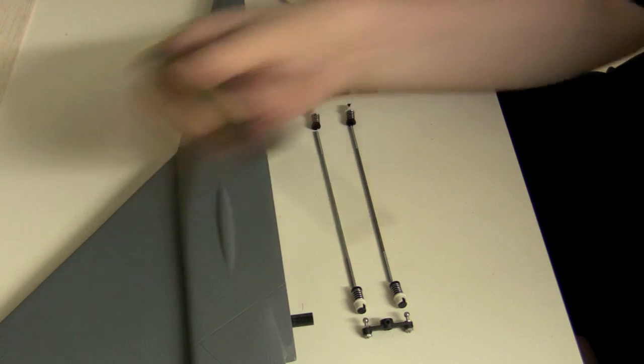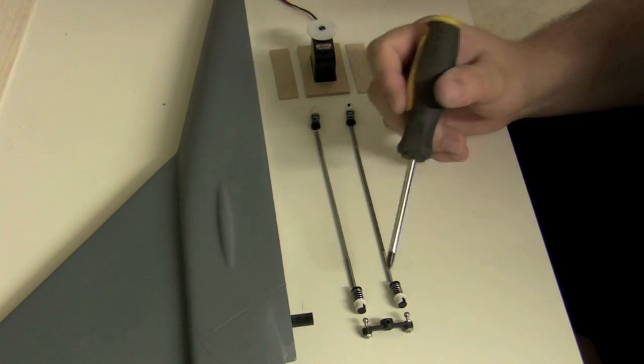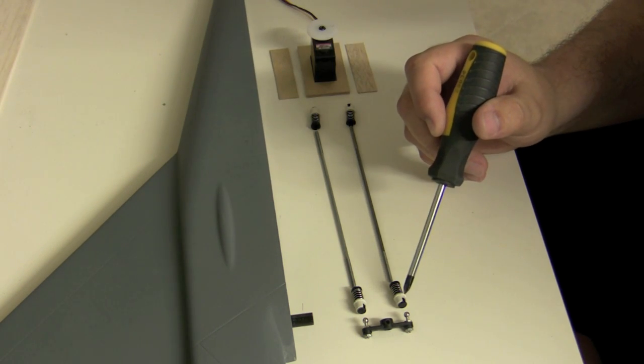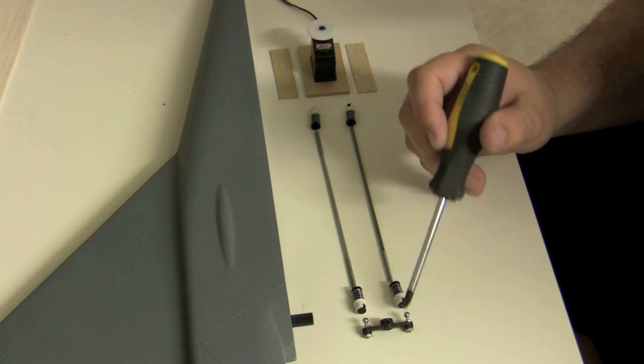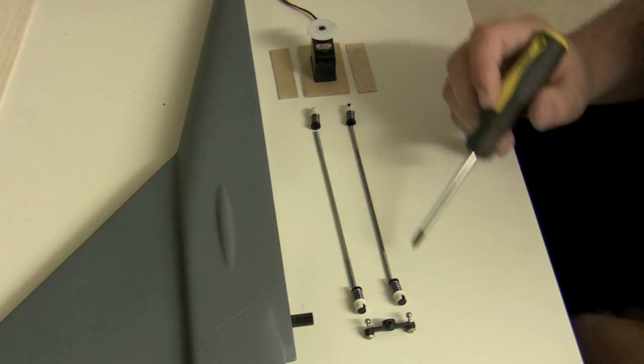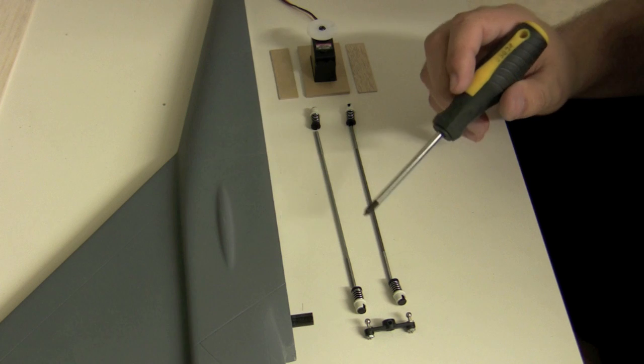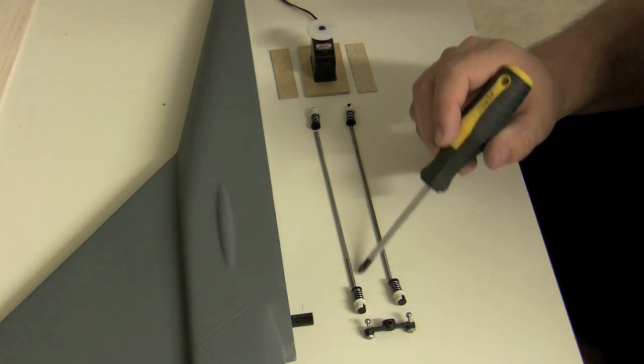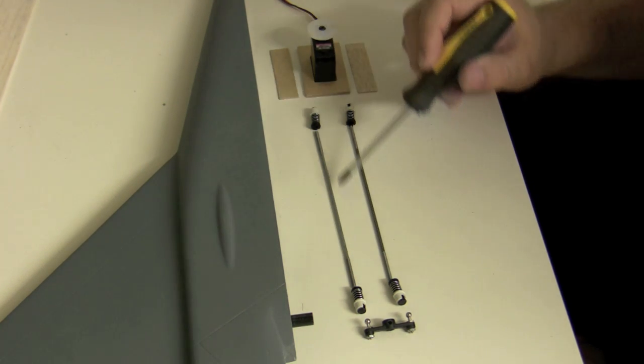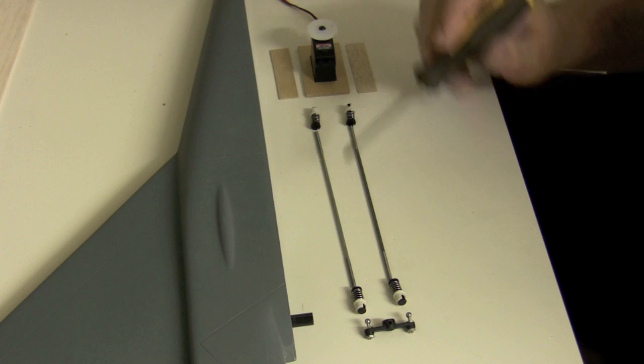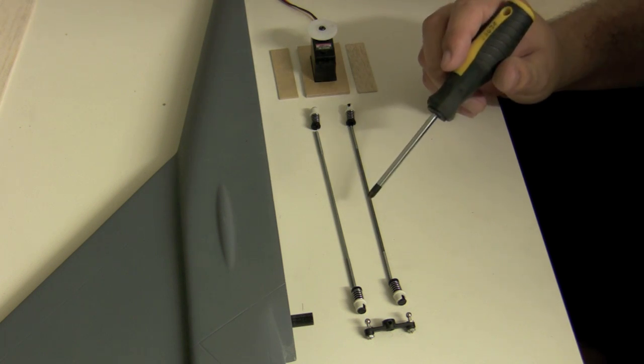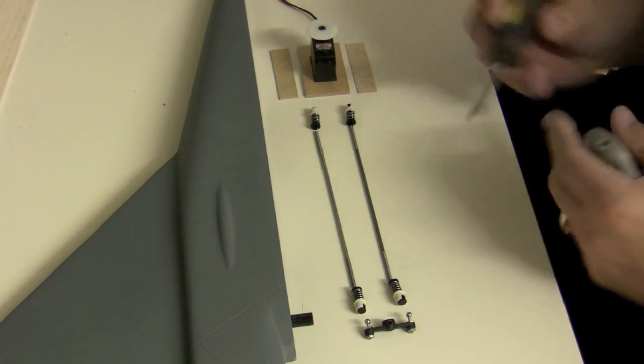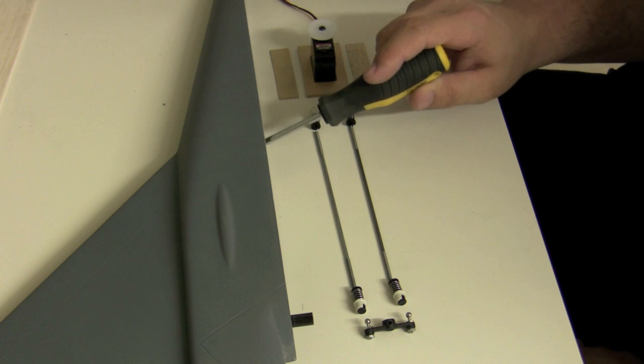I got these locking all-link connectors that are spring-loaded so that we don't have to worry about stuff coming apart. I'm using 6-inch 440 push rod threaded on both sides. That ended up being about the right size - once everything's together that'll put the servo right inside this second hole here.